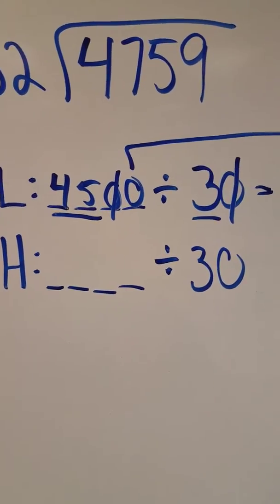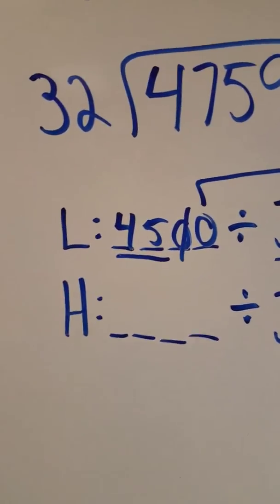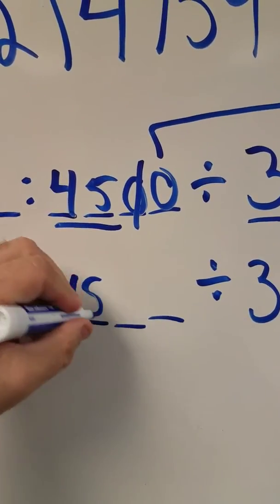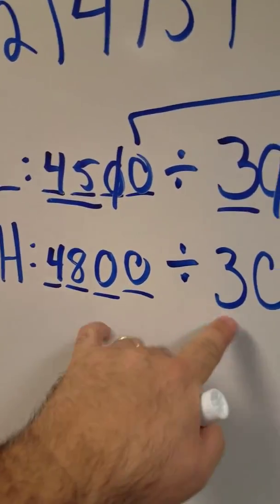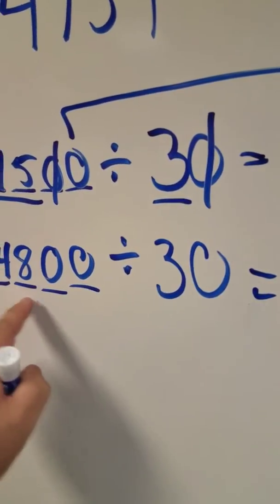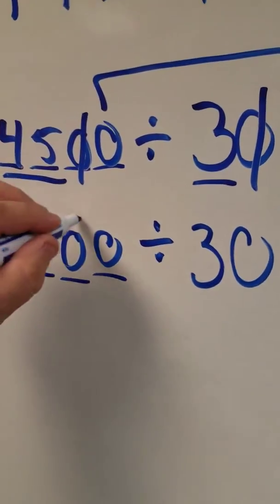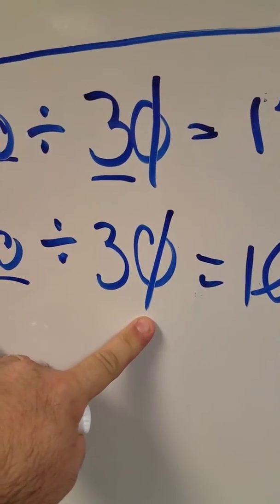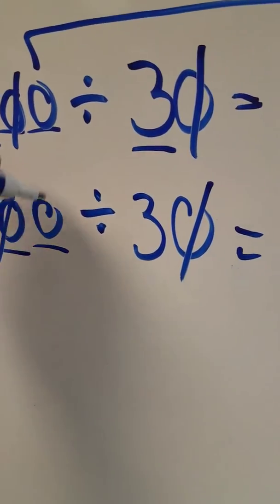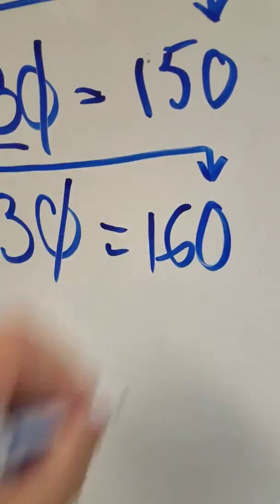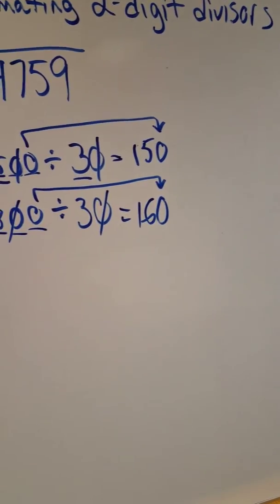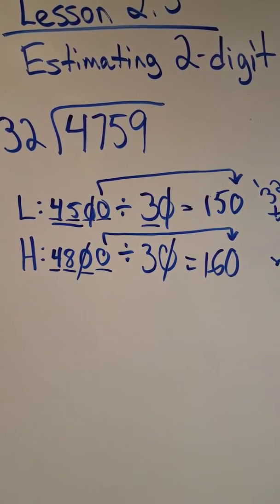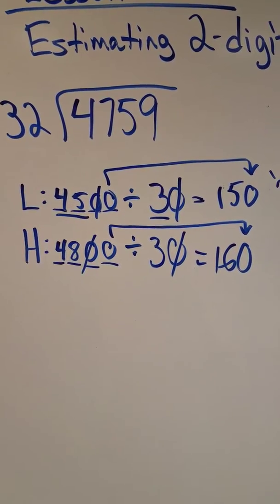Now I'm going to go on the high side. What number is compatible and divisible by three? What if I said 4,800? 4 divided by three is one, 18 divided by three is six. And again, I'm going to cancel a zero here and cancel a zero here — because they cancel each other out, power of 10 divided by a power of 10. It's gone. There is one zero left, and this guy goes along for the ride. So my real answer should be somewhere near 150 to 160.